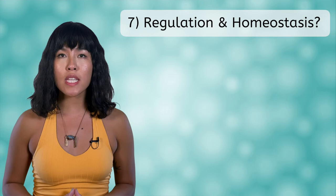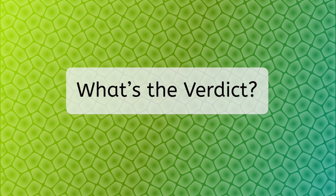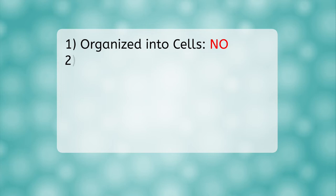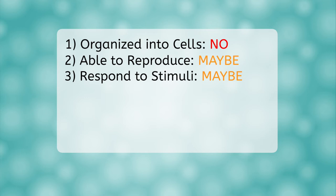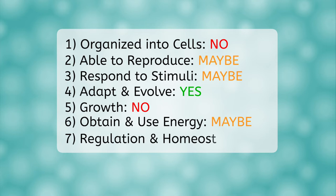To be considered alive we have already learned that all seven criteria for life must be met. Let's see how viruses did. Organized into cells? No. Able to reproduce? Maybe. Respond to stimuli? Maybe. Adapt and evolve? Yes. Growth? No. Obtain and use energy? Maybe. Regulation and homeostasis? No. They definitely don't meet all seven, so it is generally accepted that viruses are not alive. They can be better thought of as little packets of DNA that can invade cells, causing those cells to make more little packets of DNA.